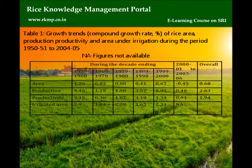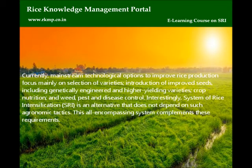Table 1: Growth trends — compound growth rate percentage of rice area, production, productivity and area under irrigation during the period 1950-51 to 2004-2005. Currently, mainstream technological options to improve rice production focus mainly on selection of varieties, introduction of improved seeds, including genetically engineered and high-yielding varieties, crop nutrition, and weed, pest and disease control. Interestingly, the System of Rice Intensification, SRI, is an alternative that does not depend on such agronomic tactics. This all-encompassing system complements these requirements.